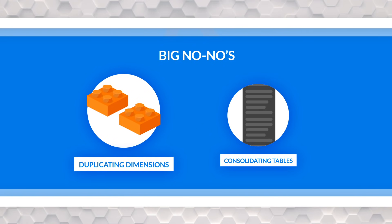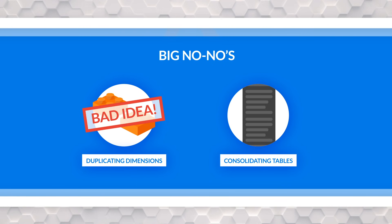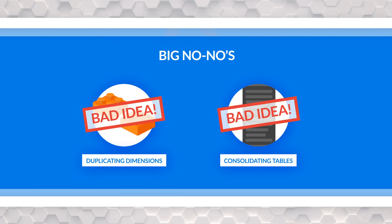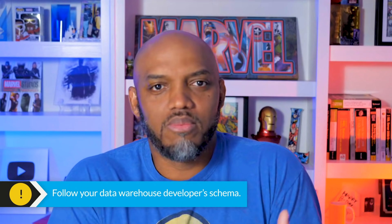So what should you do? It's really simple. If you have someone building the data warehouse, just follow the schema they gave you. They're probably a really good data warehouse developer — that's why you hired them. Use the data warehouse they developed. A lot of times I see people with data warehouses and they adopt these bad patterns. If your data warehouse doesn't do it right, get a better data warehouse developer, or at least shape the model better. Let me show you how.